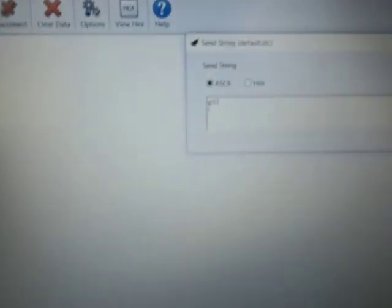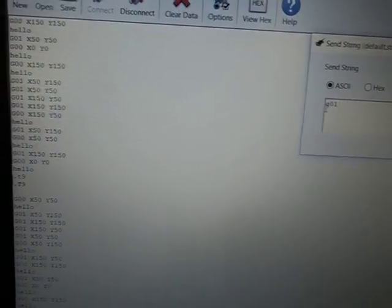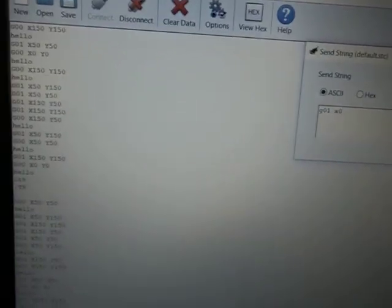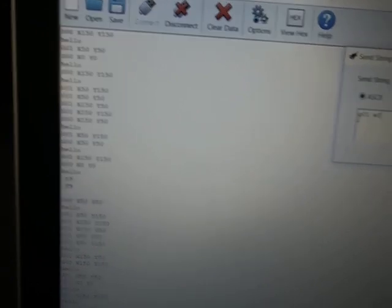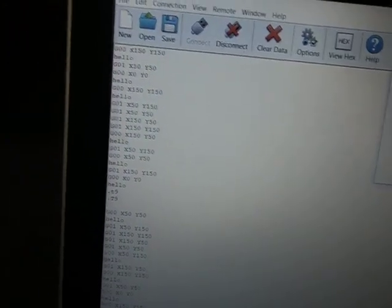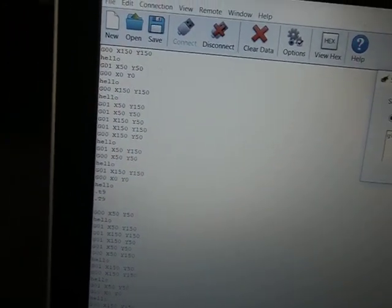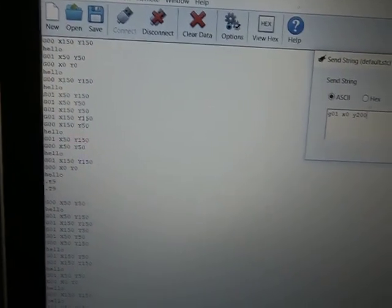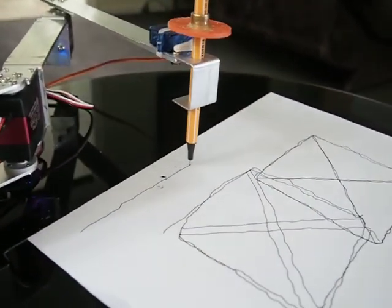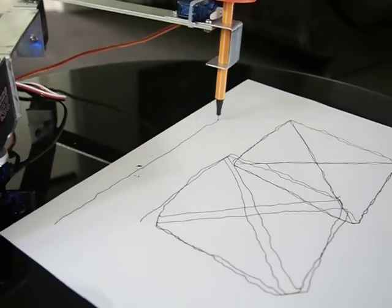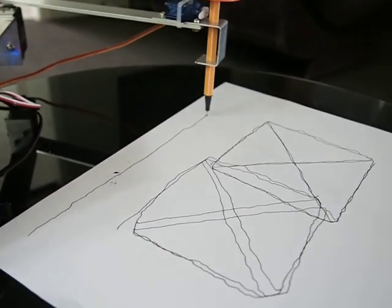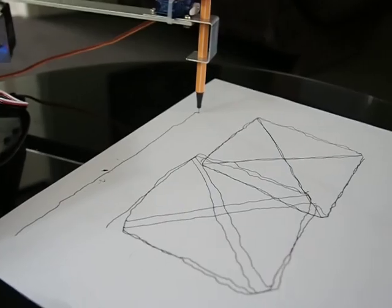So we'll go G01, we'll go X0 up to Y200, and we'll send that up. And you'll see the plotter's moving up to the corner.